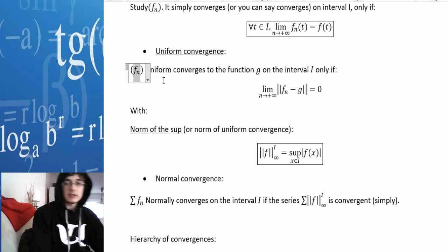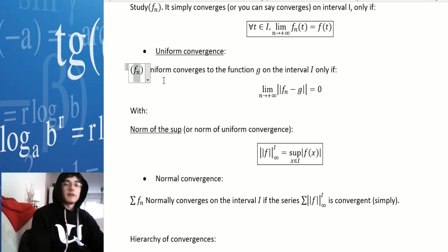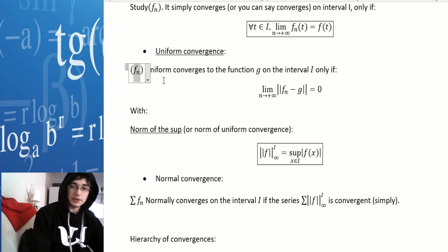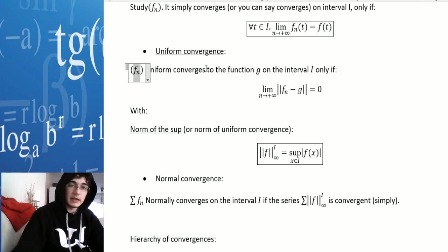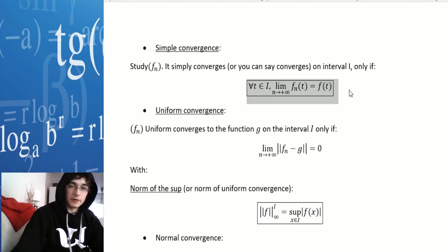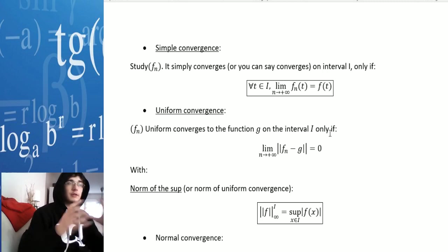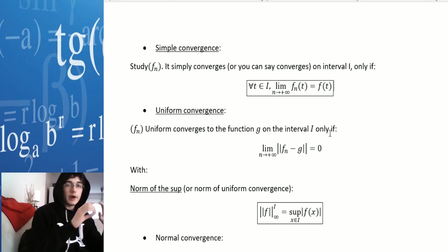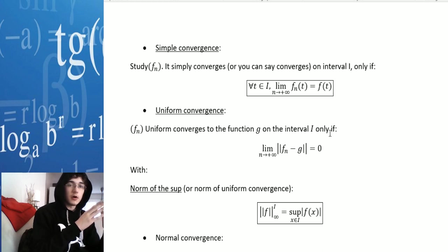What it means is basically you take the highest, the biggest element on i, and you take the absolute value of that — it can be something that isn't actually reached. And unlike simple convergence, it means that the function will always converge to that other function on every point, while simple convergence is just convergence at infinity.